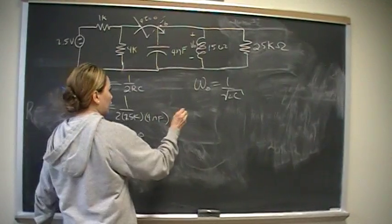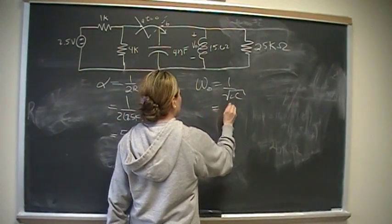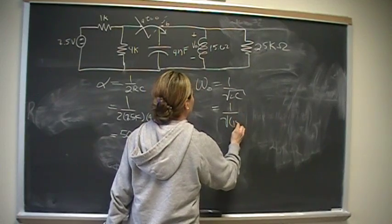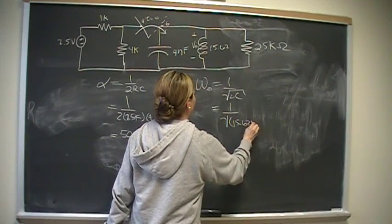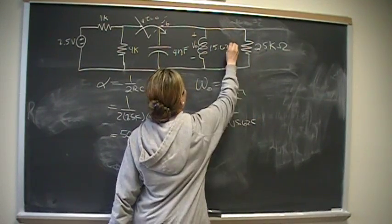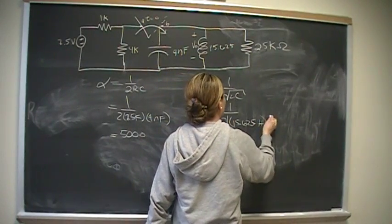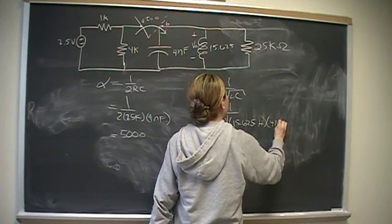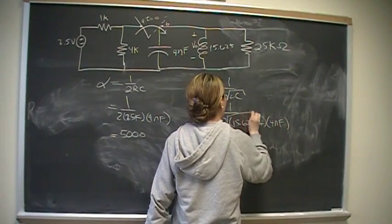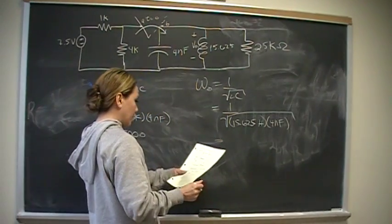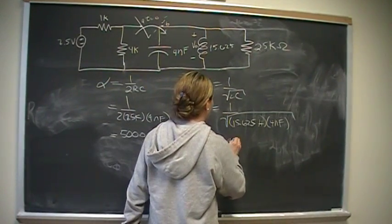And over here, omega naught is going to be 1 over root of 15.625 Henrys times 4 nanofarads. Put that into your calculator, you should come up with 4,000 radians per second.